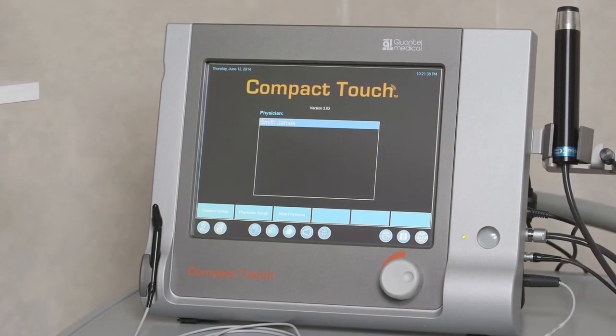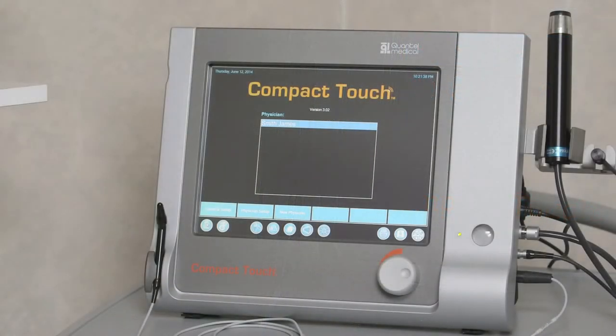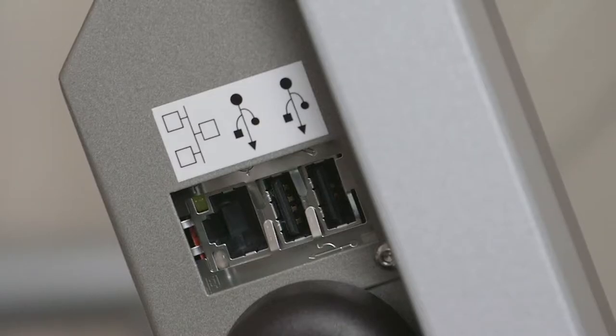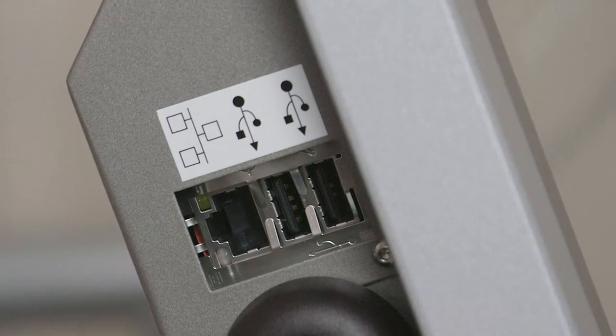The portable, versatile Compact Touch can be used for A-scan, B-scan, IOL calculation and corneal pachymetry. The stand-alone device requires no computer connection and can be controlled entirely via the touch screen. The unit is equipped with USB connections for mouse, external keyboard or file storage device.